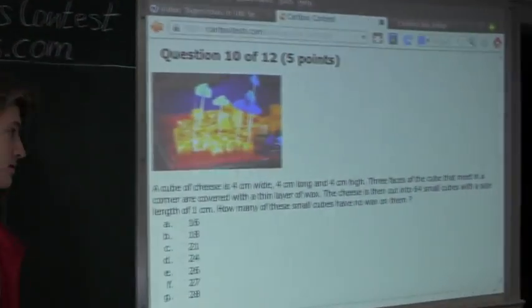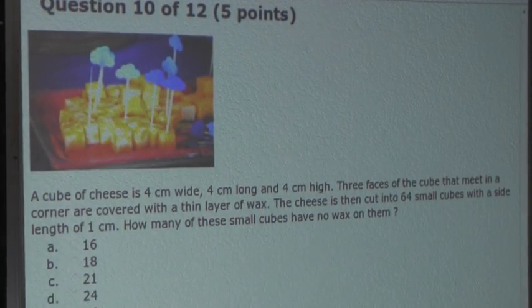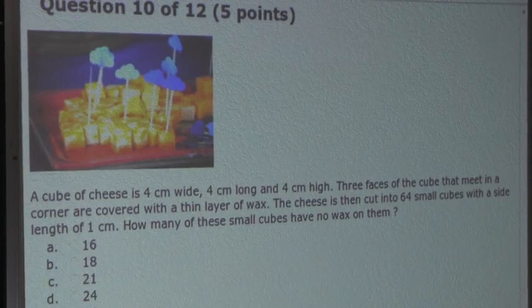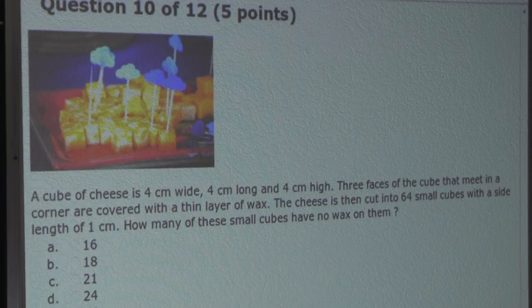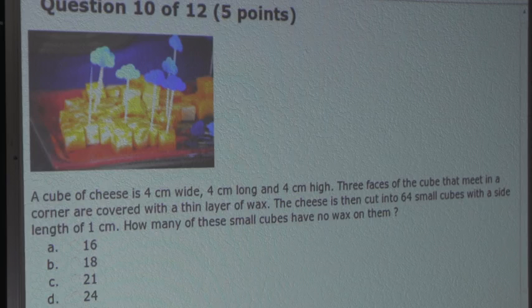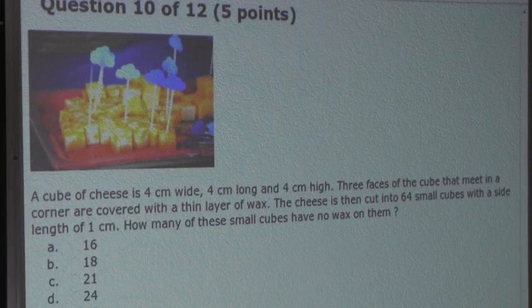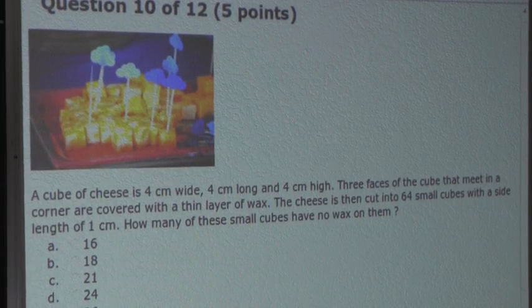So the question is: a cube of cheese is 4 cm wide, 4 cm long, and 4 cm high. Three faces of the cube that meet in a corner are covered with a thin layer of wax. The cheese is then cut into 64 small cubes with a side length of 1 cm. How many of these small cubes have no wax on them?